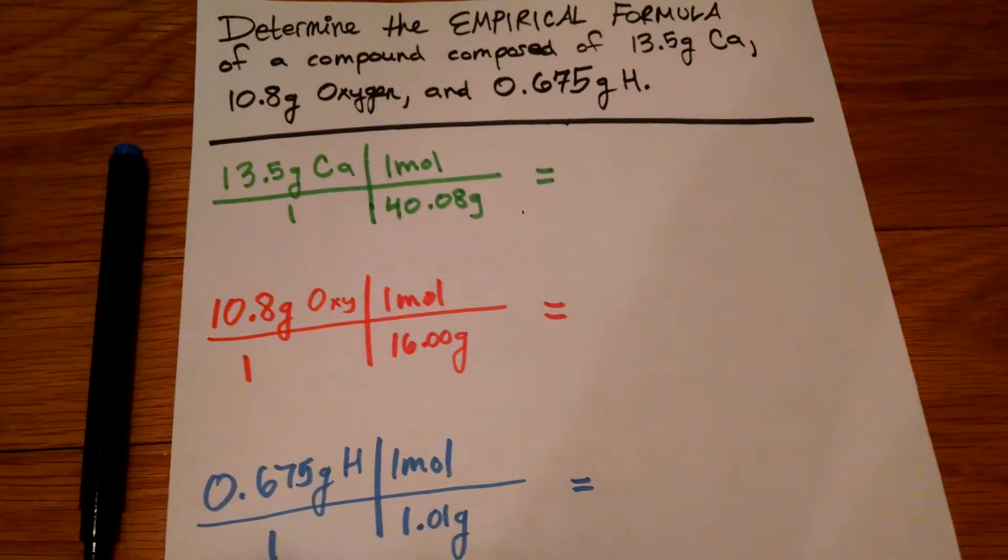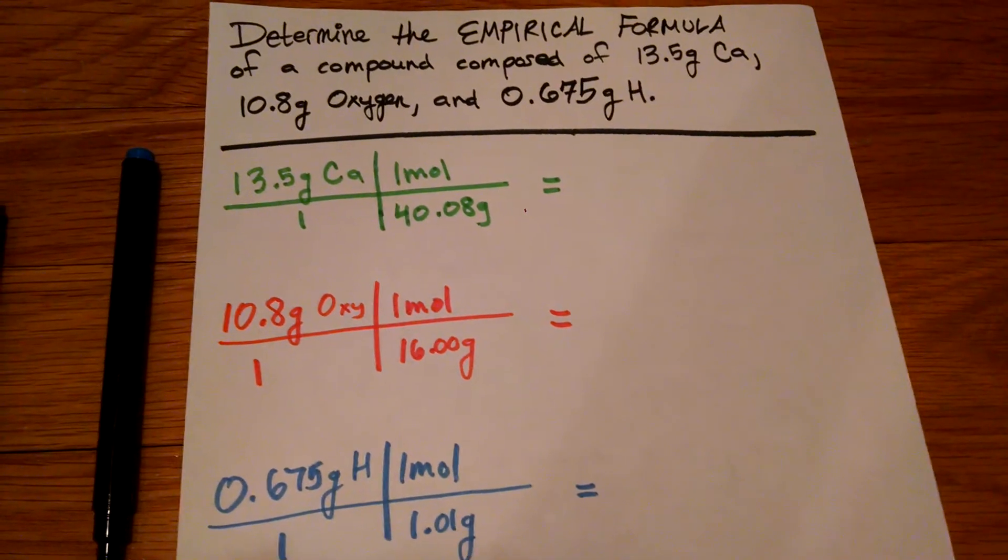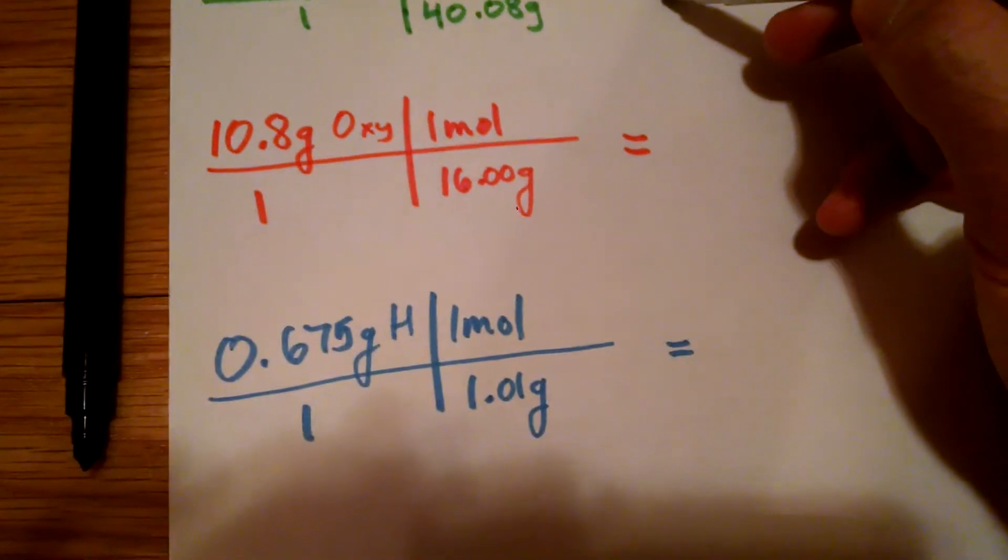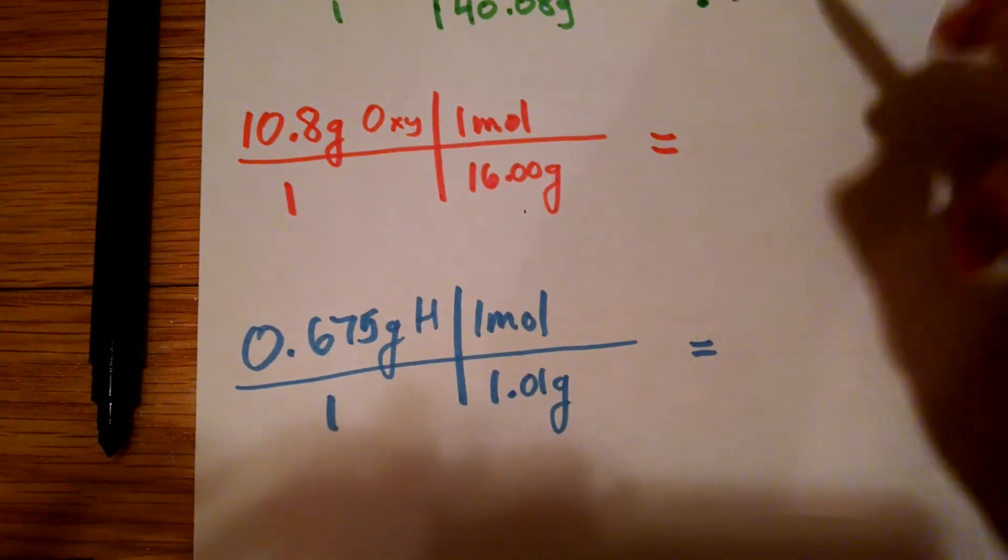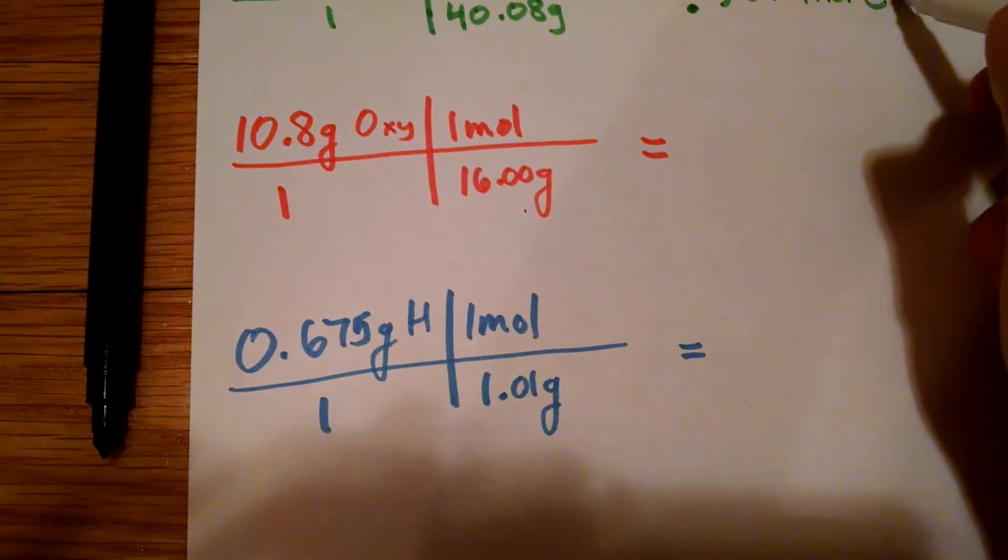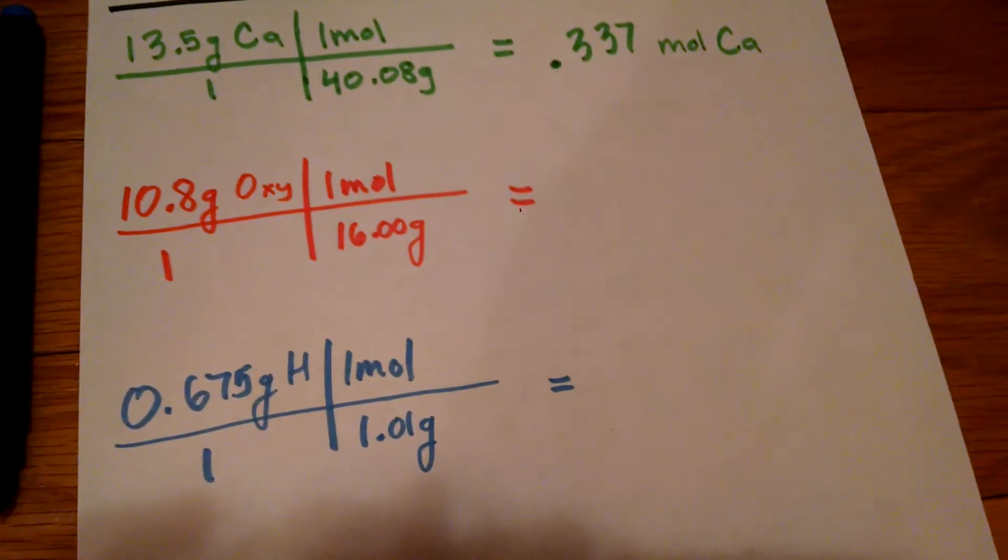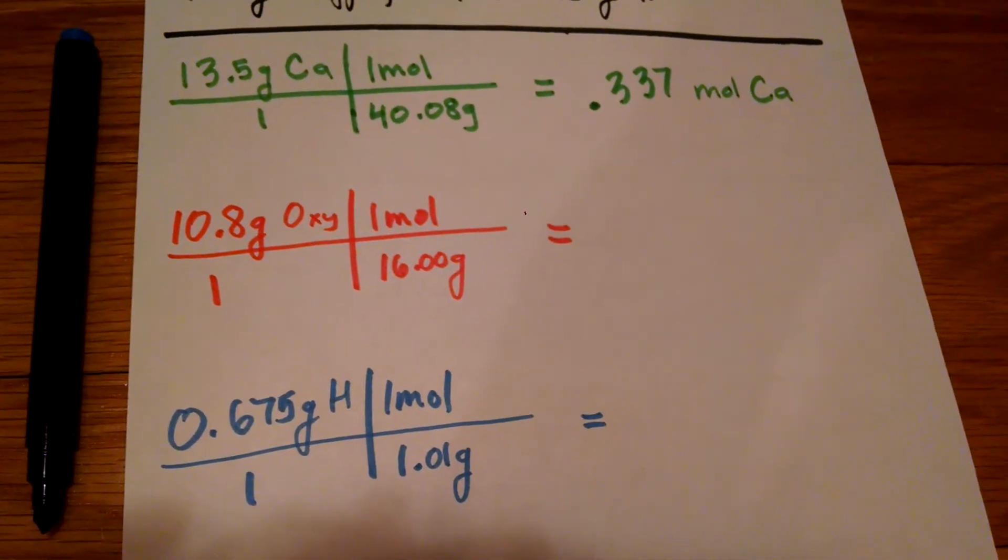We're just dividing by the molar mass, so if we do 13.5 over 40.08, using sig figs, we're going to get 0.337 moles of calcium.